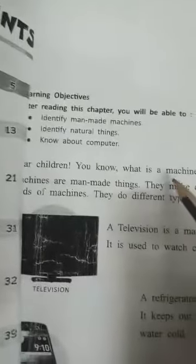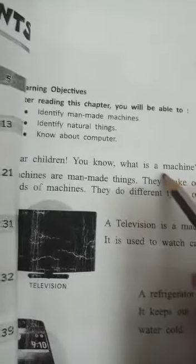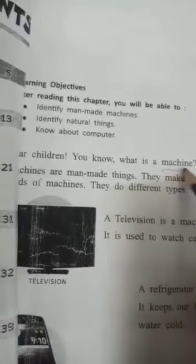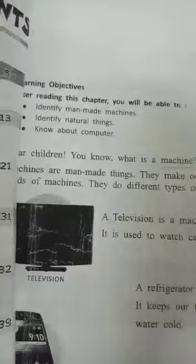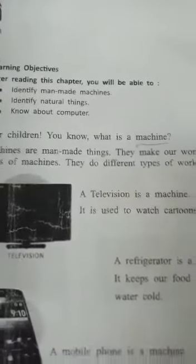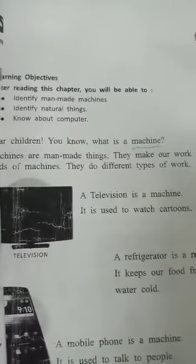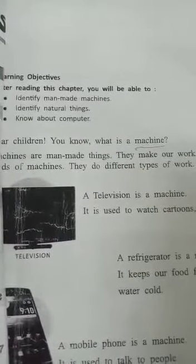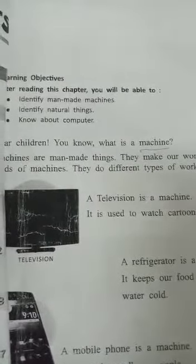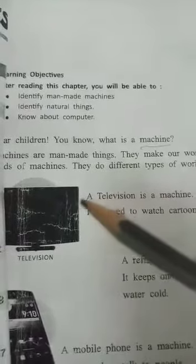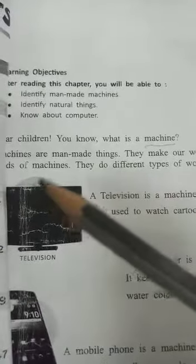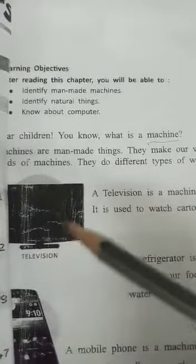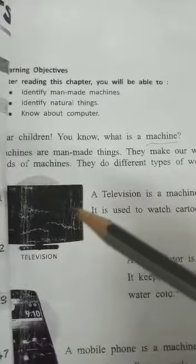Here is the spelling of machine — underline this — M-A-C-H-I-N-E, machine. You can see a lot of machines at your home. Here we are talking about one machine; you can see the picture of the machine.